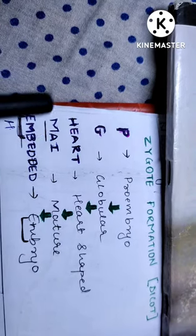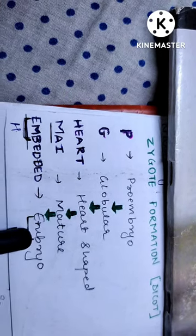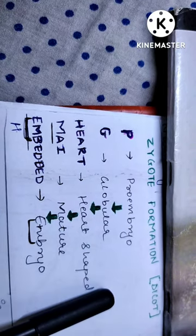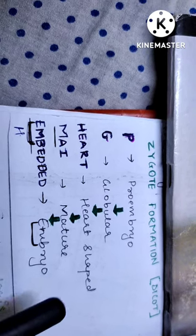That M, jo M hai, ho se ho jayega mature, and embedded se ho jayega embryo. The first stage is pro embryo, then globular, then it turns into the heart shape, then it gets matured by the time.